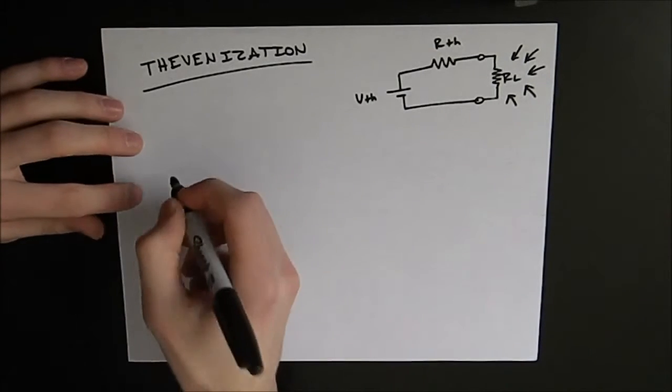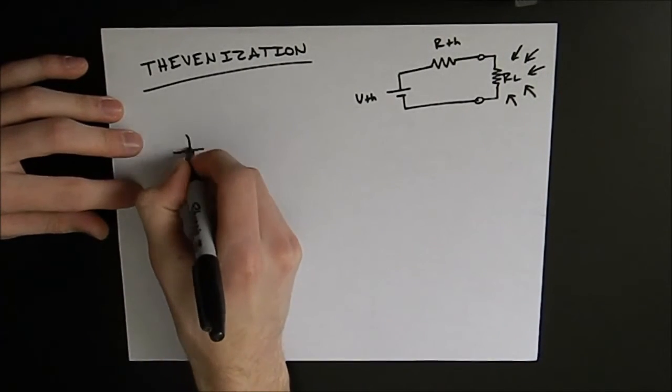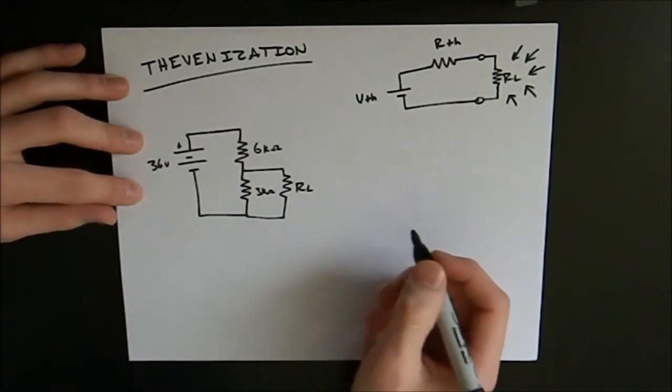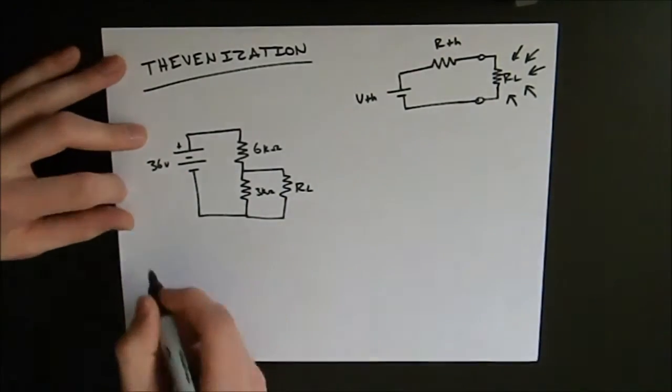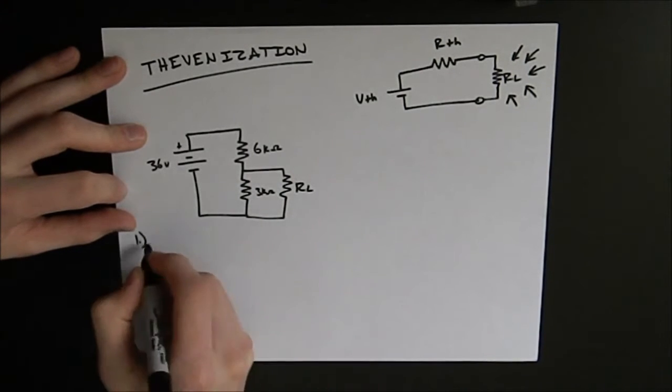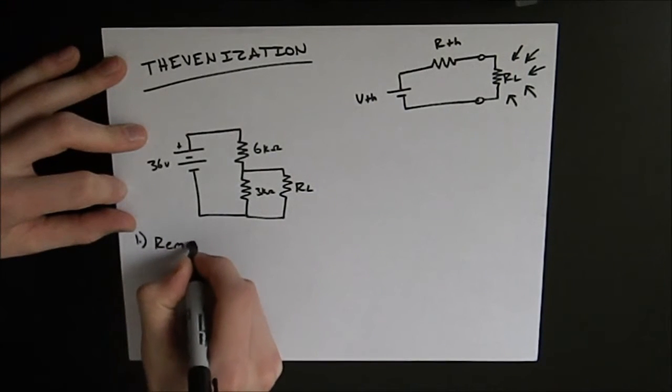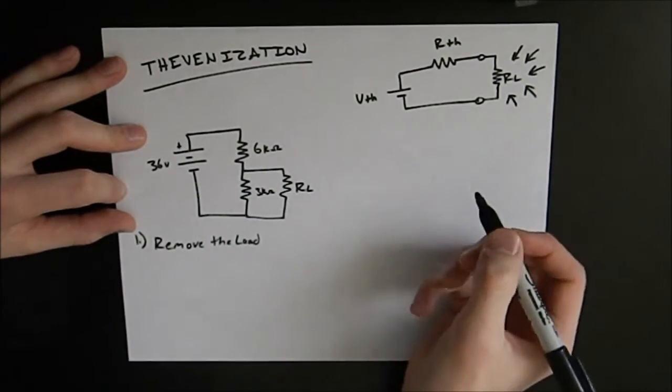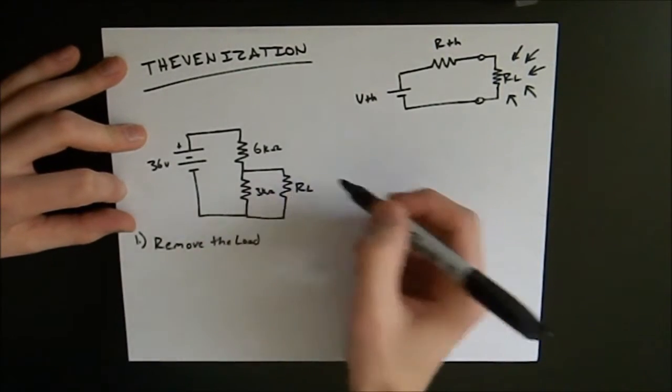The example problem that I'm going to be going through is as follows. Okay, now the first step in our thevenization process is going to be to remove the load. In this circuit the load is right here, it's going to be a resistor.